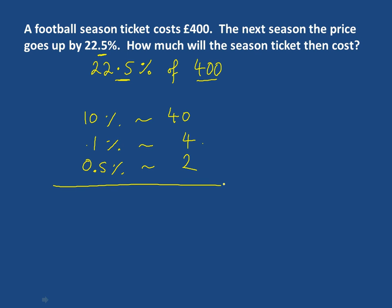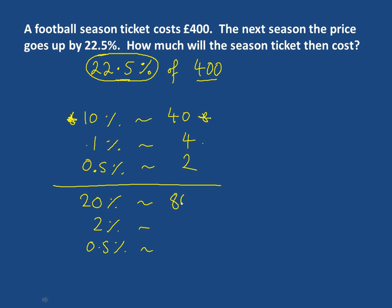We just need to say how we're going to find our 22.5%. We're going to start with 20%, 2%, and half a percent — those are the pieces we need. So 20% is 2 tens, so 2 of them is 80. 2% is 2 ones, so 2 of them is 8. And half a percent — we already know — is 2. Add that up, and 22.5% is 90.